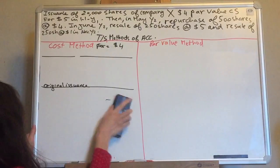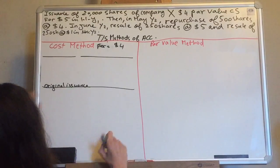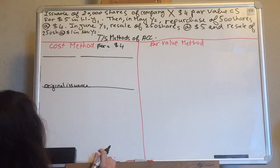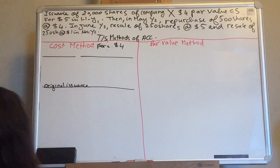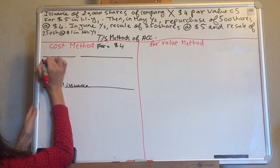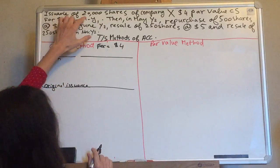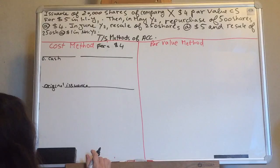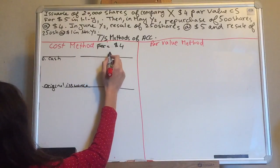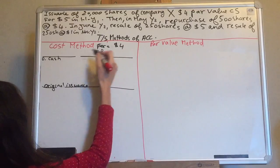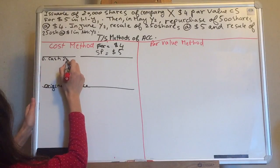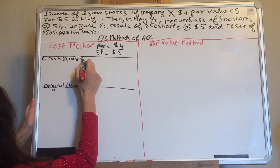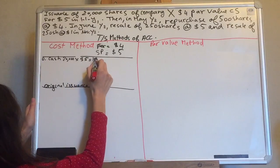First, the original issuance of 20,000 shares of Company X, $4 par. When you issue something — when you sell something — think about your cash. Your cash increases. Your cash increases on the debit side. So you debit cash: 20,000 shares times the selling price, the issuing price of $5, equals $100,000.